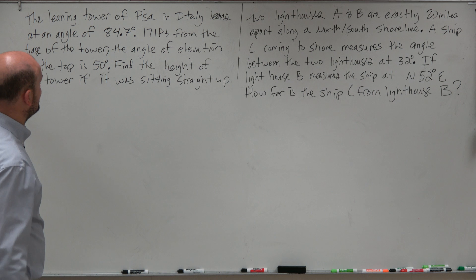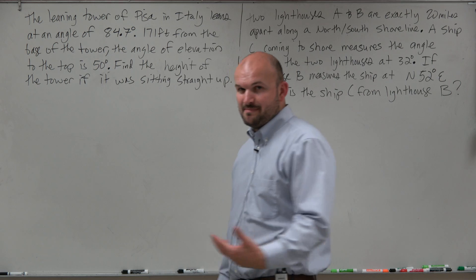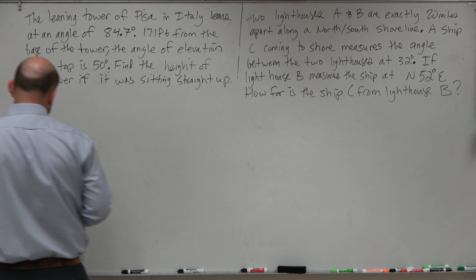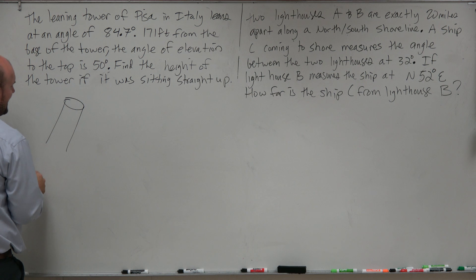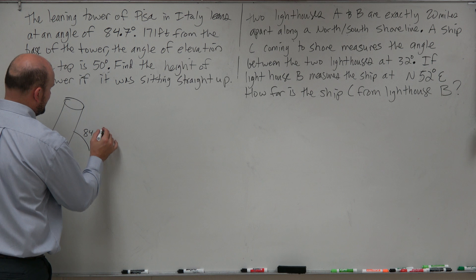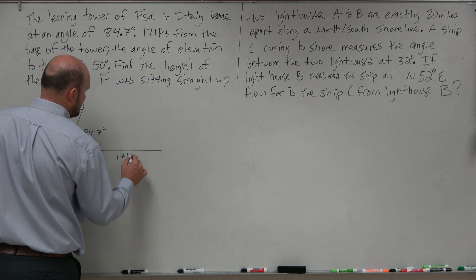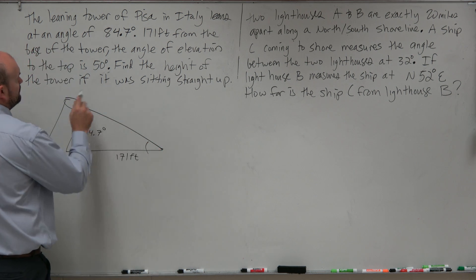Alright, so the first one says the Leaning Tower of Pisa in Italy leans at an angle of 84.7 degrees. 171 feet from the base of the tower, the angle of elevation to the top is 50 degrees. So here you have your nice little Leaning Tower of Pisa, it's kind of going like this. And I'm saying that angle right there is 84.7 degrees. 171 feet away you have an angle of elevation to the top, which is 50 degrees.